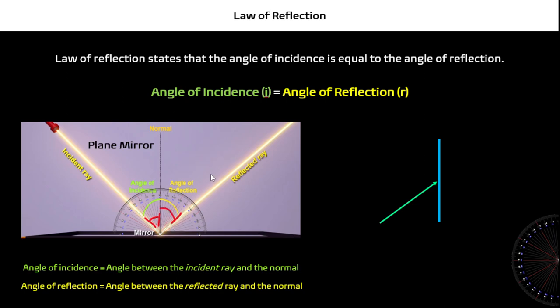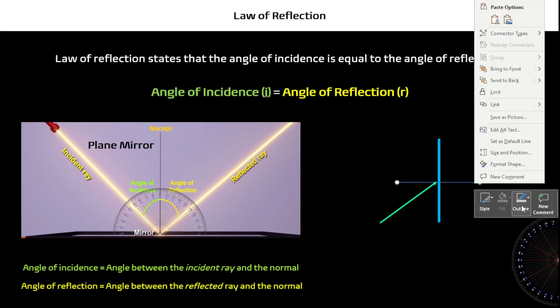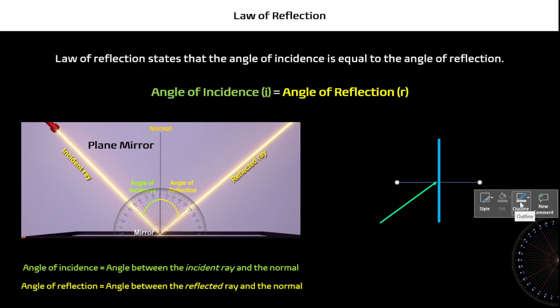Let's do an example. If your light ray is going to hit this plane, how is it going to be reflected? First, what you're going to do is always draw a normal line. Let's draw a normal line here. Why did I draw this here? Because your normal line should always be perpendicular to your plane.